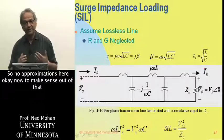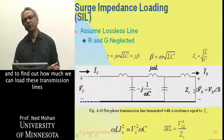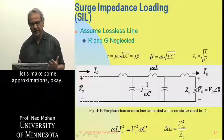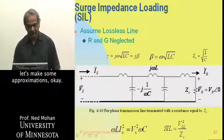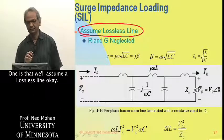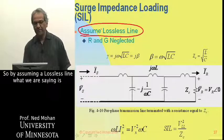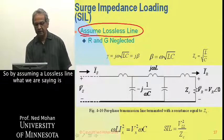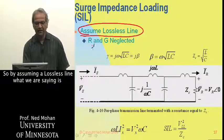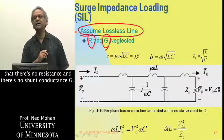Okay, now to make sense out of that and find out how much we can load these transmission lines, let's make some approximations. One is that we'll assume a lossless line, just to get some handle on this here. So by assuming a lossless line, what we are saying is that there's no resistance and there's no shunt conductance G.